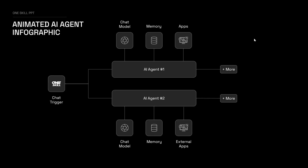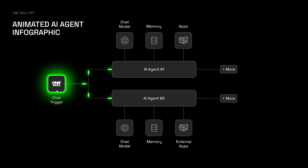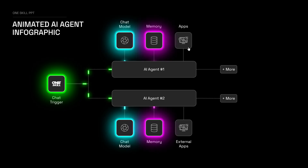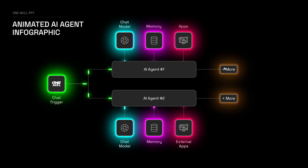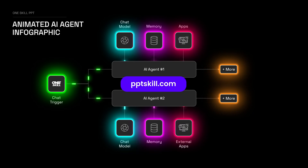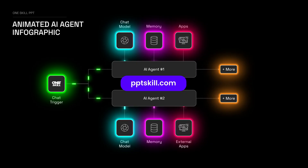We can even do one more version where we integrate animation triggers, where we click on the first element and get these little lasers, then click on the others. For this tutorial we'll keep it simple, but for the more in-depth lesson feel free to check it out — PowerPoint Animation Mastery on pptskill.com, link is in the video description. Now let's jump into the tutorial.